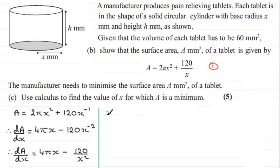So at a minimum, let's just put here at a min, dA/dx must equal 0. That's the gradient will be 0. So we can work with this equation here. So we would therefore have 4πx minus 120 over x² would equal 0.